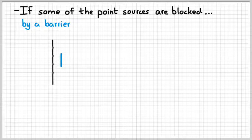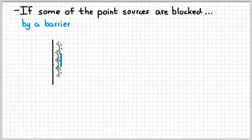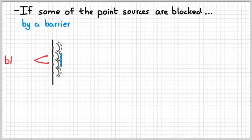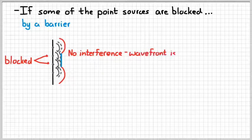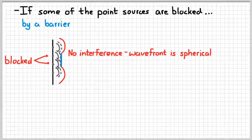Unless something is blocking one of those point sources. Here's our wave again, but this time it's being blocked in the middle by a barrier. Same starting point — each of those four point sources acts like a spherical wave source — except the two in the middle are blocked. So we won't get any interference from the middle like we did before. There's no interference around here, and so that spherical shape actually gets through — we don't get that line created by interference.